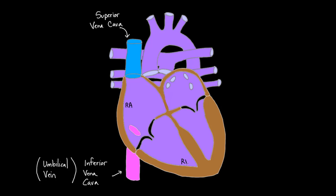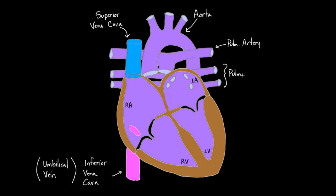Let me quickly label the rest of the chambers: the right ventricle, the left atrium, and the left ventricle — those are the four chambers. The major vessels are the aorta at the top, the pulmonary artery, and the pulmonary veins. There are two pulmonary veins on each side.